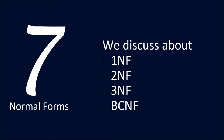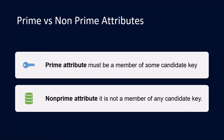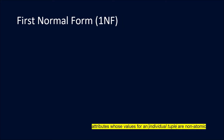There are seven types of normal forms, but we will discuss the first, second, and third normal forms and BCNF. Before starting, we need to know what prime and non-prime attributes are. Prime attributes must be a member of some candidate key, and non-prime attributes are not a member of any candidate key in the relation.